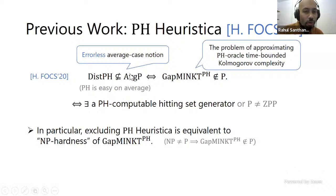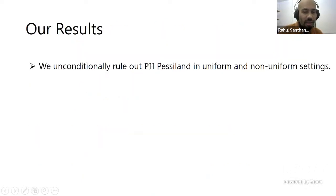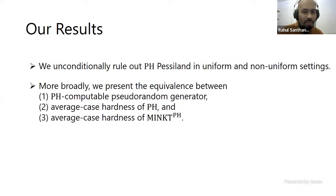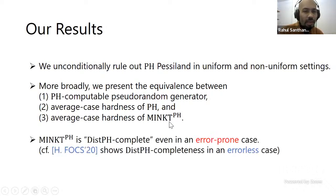Just to refer back to my previous talk, the notion of average case hardness in Shuichi's work is always errorless average case hardness. What we do is consider error-prone average case hardness when we consider Pessiland. We look at the assumption that pH is not in heuristic-PPP and unconditionally rule this out. We present equivalences between pH-computable pseudo-random generators, average case hardness of pH, and average case hardness of this meta-complexity problem about time-bounded complexity with the pH oracle.